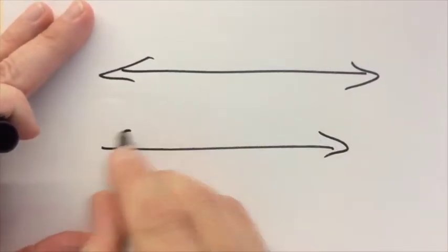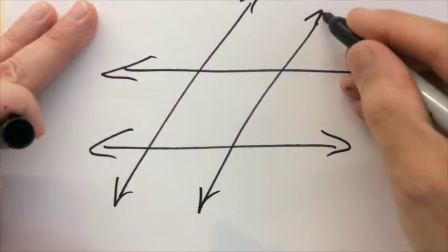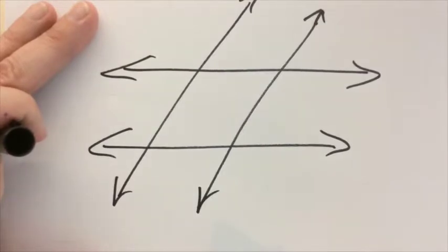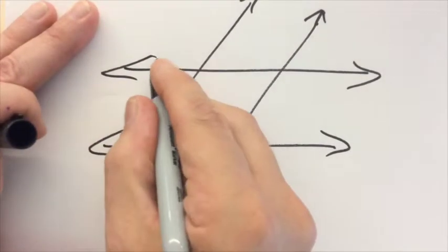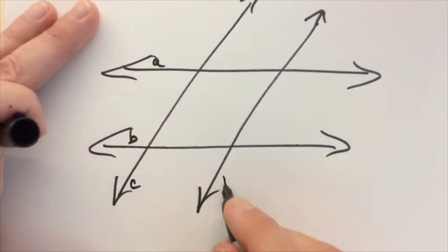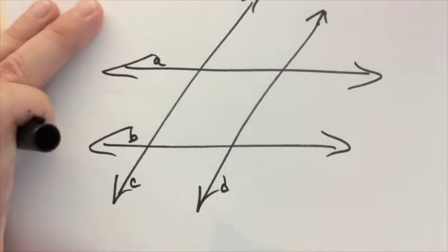Absolutely the quintessential parallel line standard question. How many transversals do you see? There are four, right? This line crosses two lines, this line crosses two lines, this line crosses two lines, and this line crosses two lines. And that's all you have to do to be a transversal.